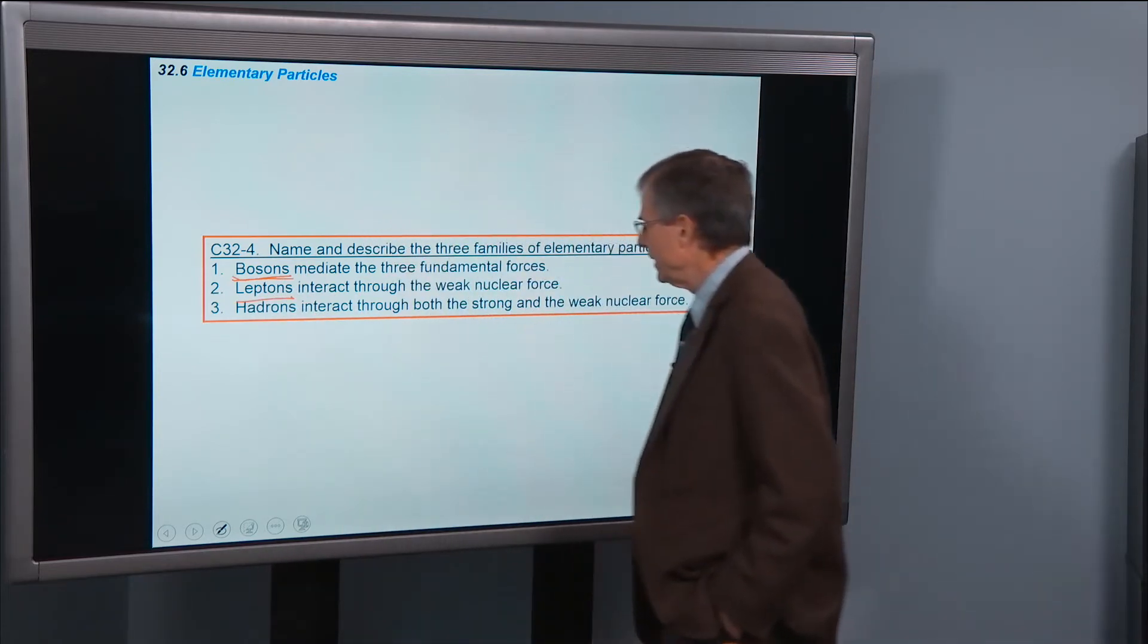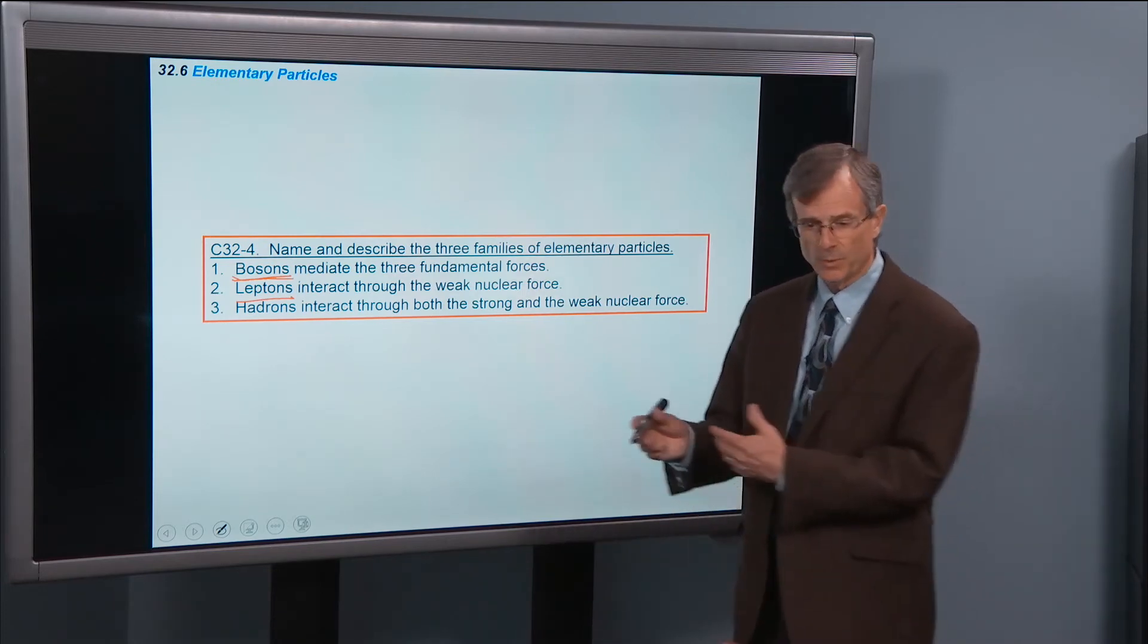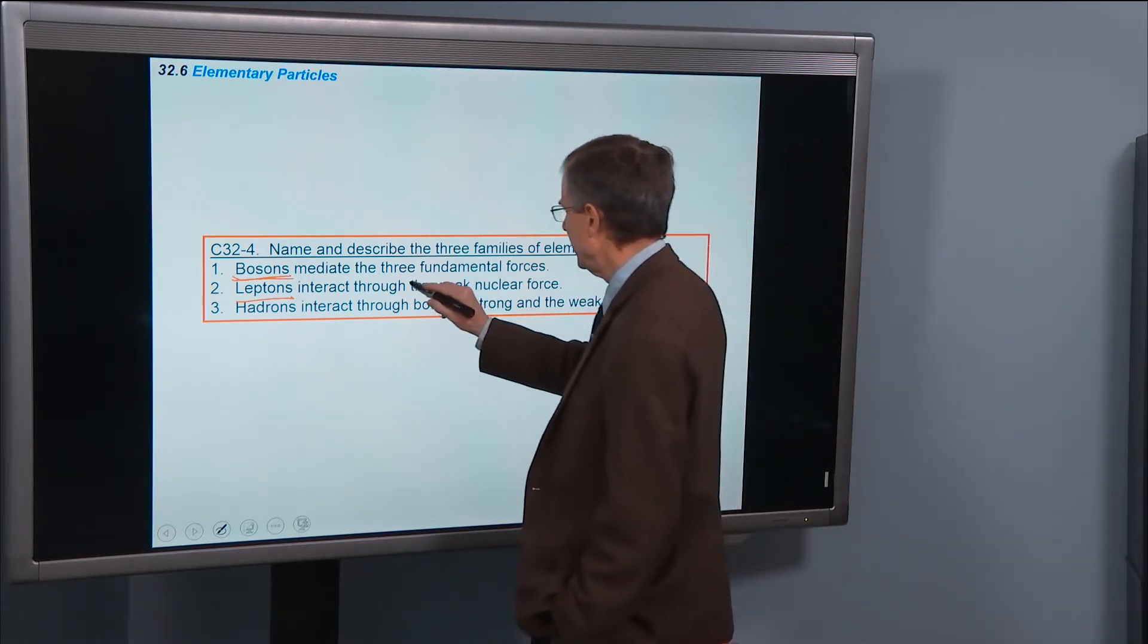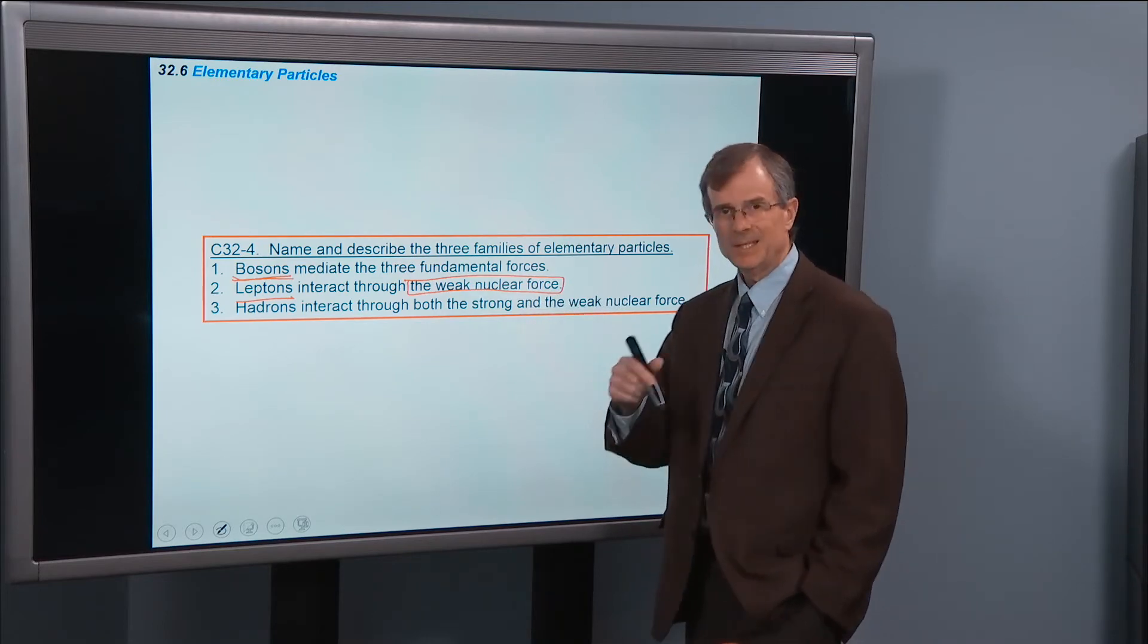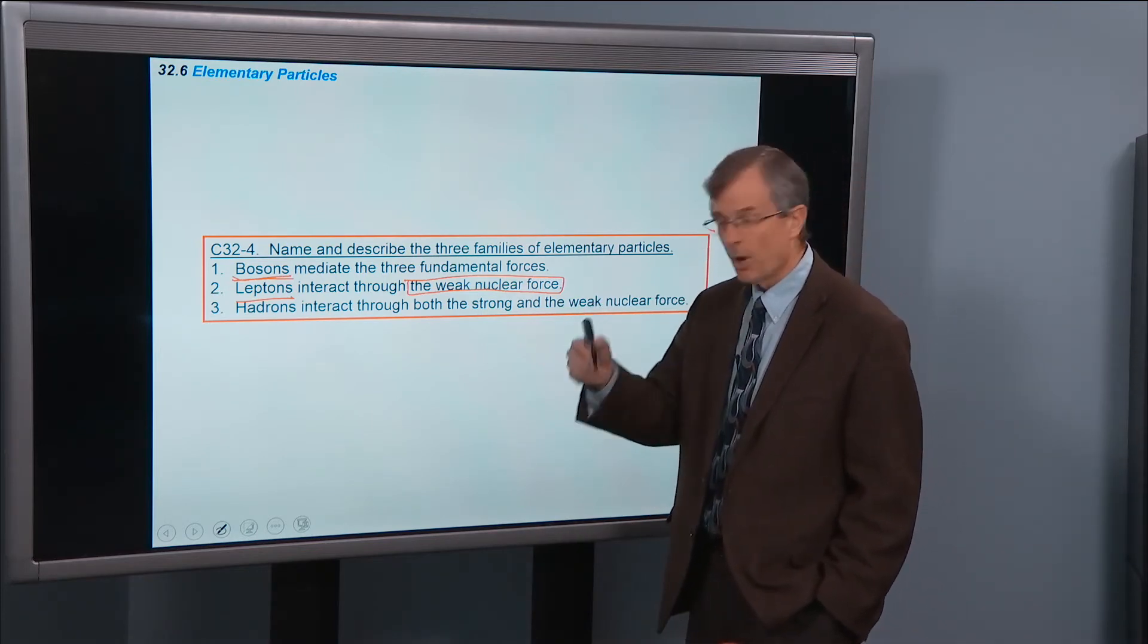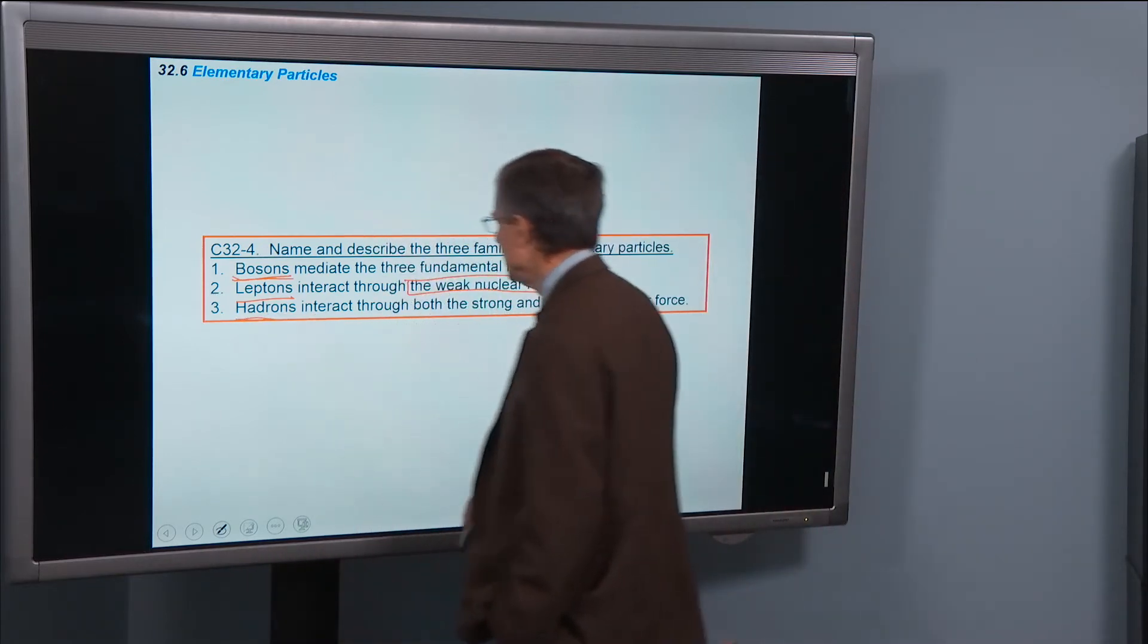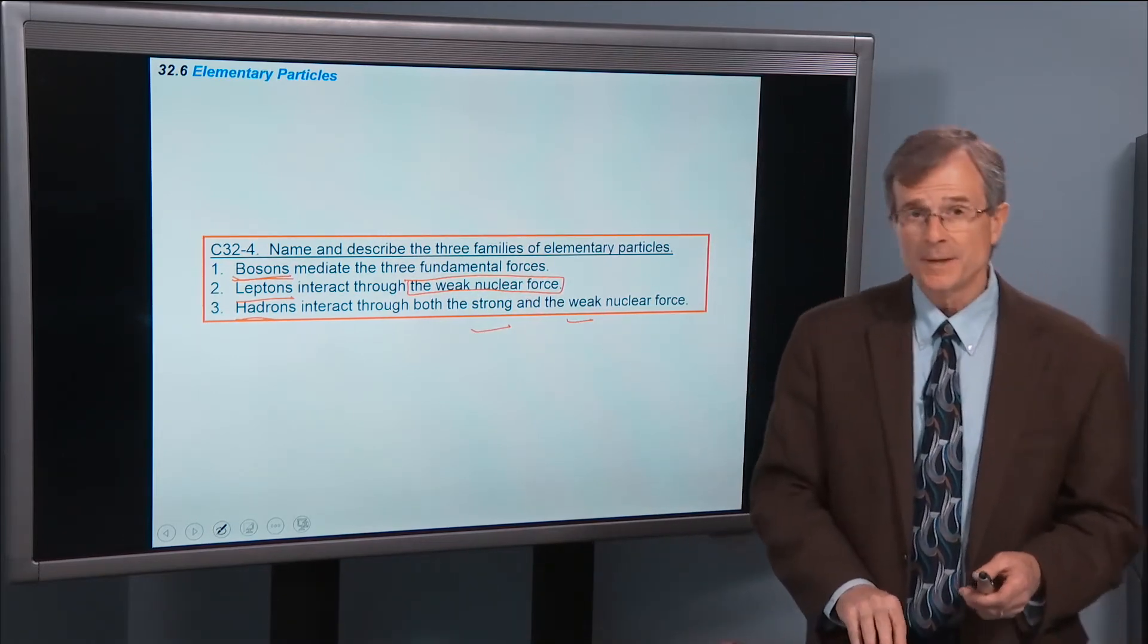Leptons interact through the weak nuclear force. We've talked about the weak nuclear force. It's the one responsible for beta decay. And these leptons interact through this force. They can also interact through gravitational forces and electromagnetic forces. But as long as they interact through the weak nuclear force, they are leptons. One example of a lepton is an electron. Hadrons interact through both the strong and the weak nuclear force. One example of a hadron is a proton.